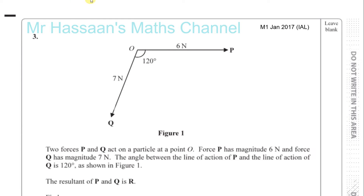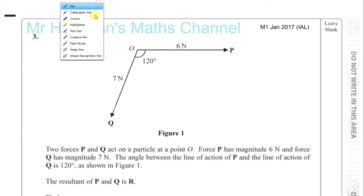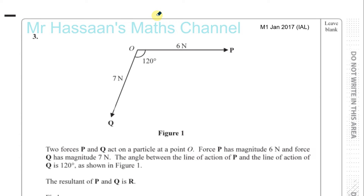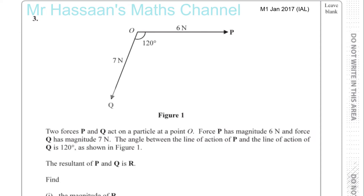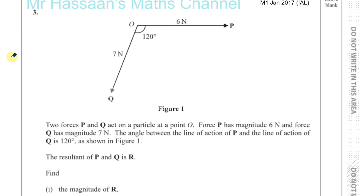Here I have a question from January 2017, M1 paper, International A Level, question number 3. It's about resultant forces. It says two forces, P and Q, act on a particle at O. The force P has a magnitude of 6 newtons and force Q has a magnitude of 7 newtons. The angle between the line of action of P and Q is 120 degrees, as shown in the diagram.